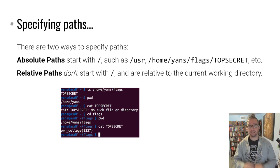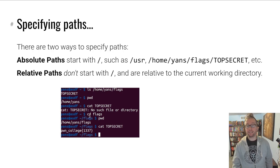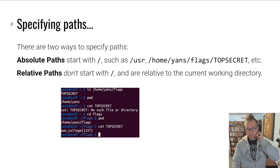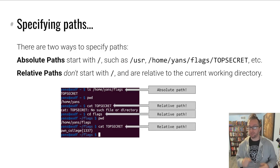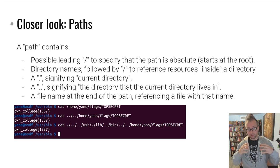That previous concept about every process having a current working directory is really used when the process tries to access a relative path — that relative path starts from that current working directory. Here, with my current working directory in /home/yans, I try to cat top-secret, but there's no top-secret file in /home/yans — it's in /home/yans/flags. If I cd into flags and then cat top-secret, it comes out. Paths that start with slash are absolute paths; these other paths that don't start with slash are relative paths.